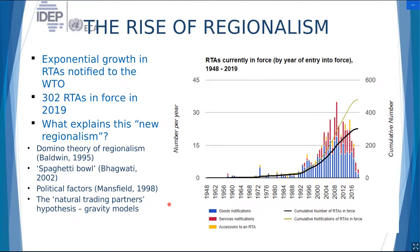There has been an exponential increase in the number of regional economic arrangements notified to the WTO. As of 2019, more than 300 RTAs were in force. What explains this exponential increase in regionalism? Especially starting in the 1990s, you can see a sharp increase in the number of RTAs notified to the WTO. Several explanations have been put forward for this rise of regionalism.